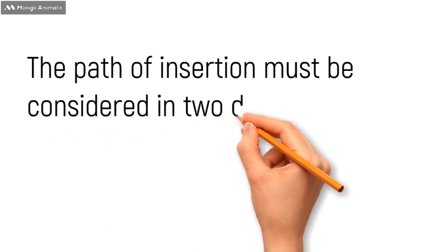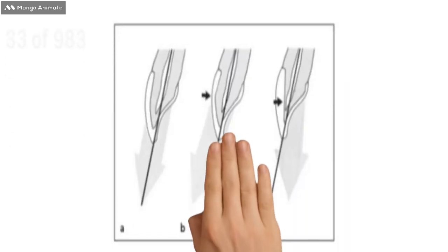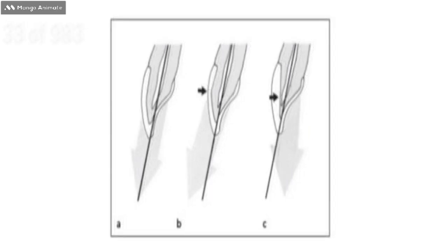The path of insertion must be considered in two parts: facial-lingually and mesiodistally. Talking about the facial-lingual dimension, in this image you can see A which is the ideal one. The ideal path of insertion should be parallel to the long axis of the teeth. In B you can see the path is directed facially, which is making the facial incisal angle very prominent, so it will create aesthetic problems. While in C you can see the path is directed lingually, so the facial surface intersects lingual surface, creating a shorter prep, and it may also encroach the pulp. So the ideal one is A, which is parallel to the long axis of the teeth.